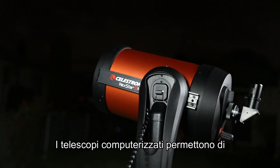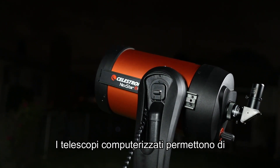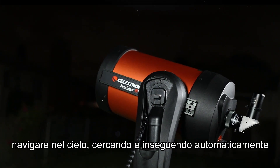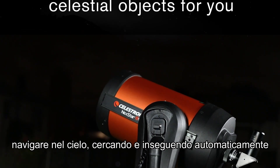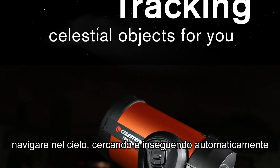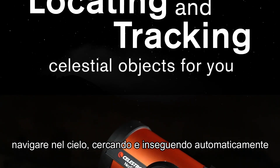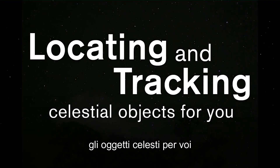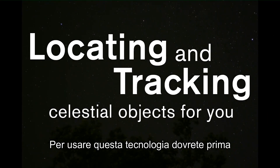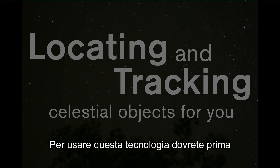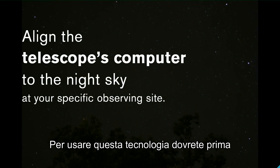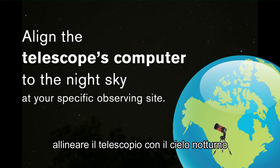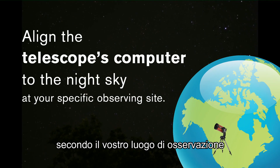Computerized telescopes take the guesswork out of navigating the night sky by automatically locating and tracking celestial objects for you. But in order to use this technology, you'll first need to align the telescope's computer to the night sky at your specific observing site.